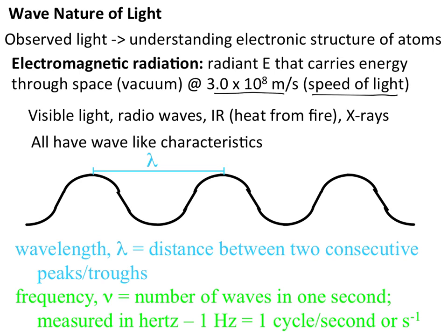That's going to be 3.0 × 10⁸ m/s. Electromagnetic radiation consists of various types of light, including visible light, radio waves, IR, x-rays, gamma rays, etc. All of these forms of light have wave-like characteristics.